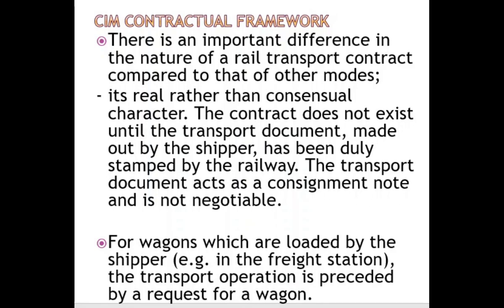For wagons which are loaded by the shipper at a freight station, the transport operation is preceded by a request for a wagon. The contractual framework prescribes that the first action to be taken is for the shipper to order a wagon to carry their goods. It is not the carrier that decides which wagon to use — the shipper must know. This is why a forwarder needs to know the characteristics of the various wagons available in the rolling stock, so they can order the appropriate wagon, which is the first step in the process.